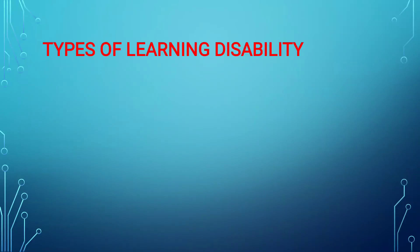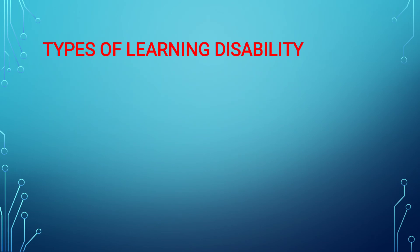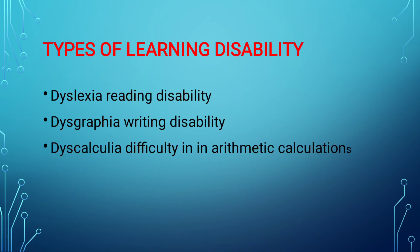The three main types of learning disabilities are: dyslexia, which means reading disability; dysgraphia, the writing disability; and dyscalculia, a difficulty in performing basic mathematical and arithmetic calculations.